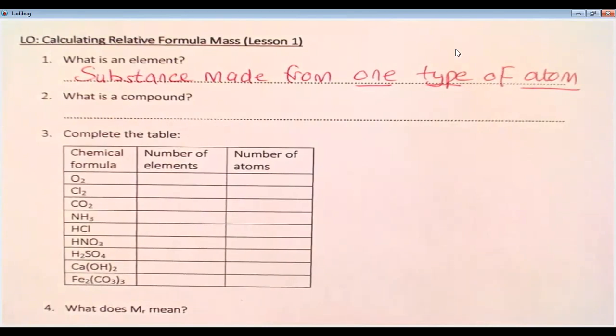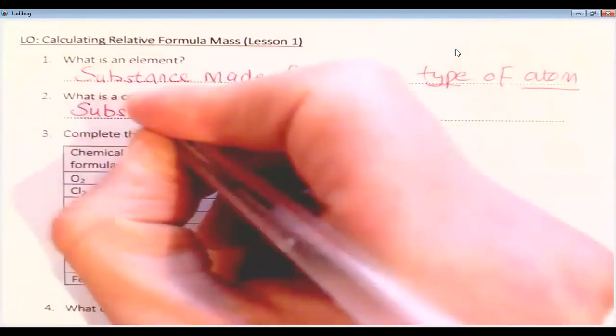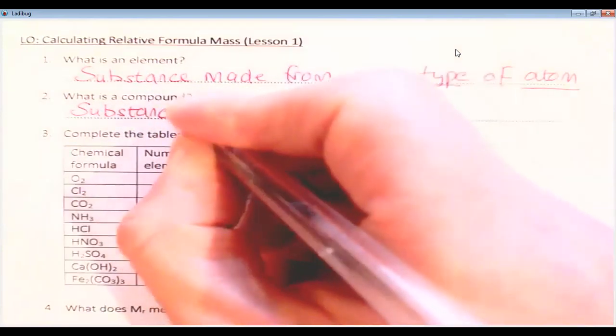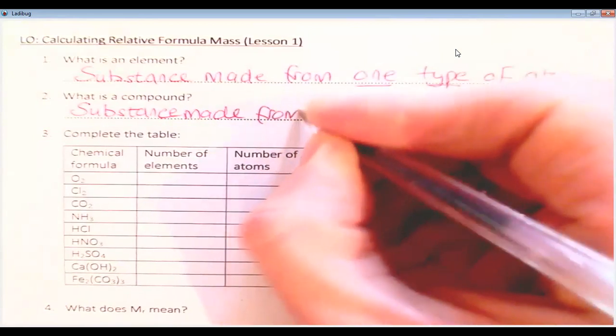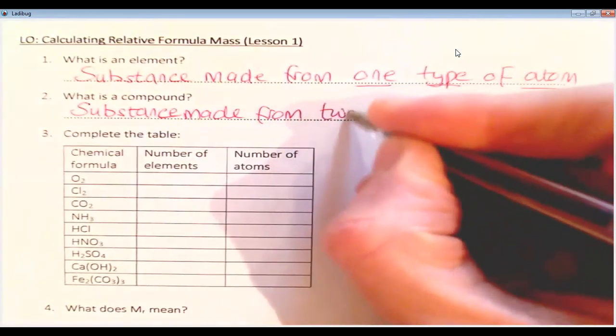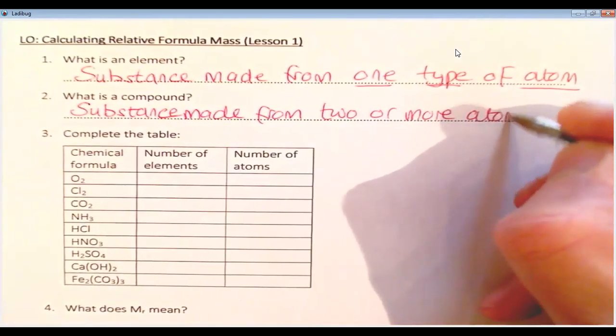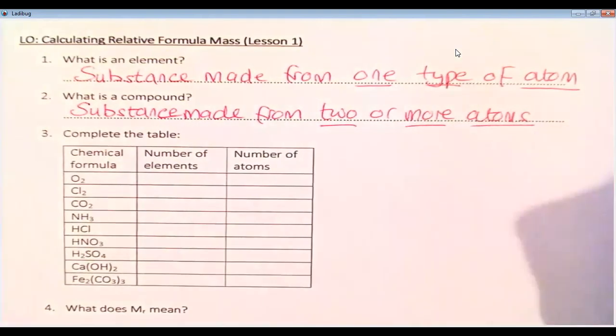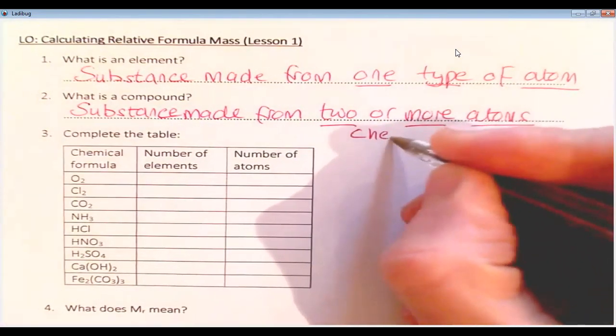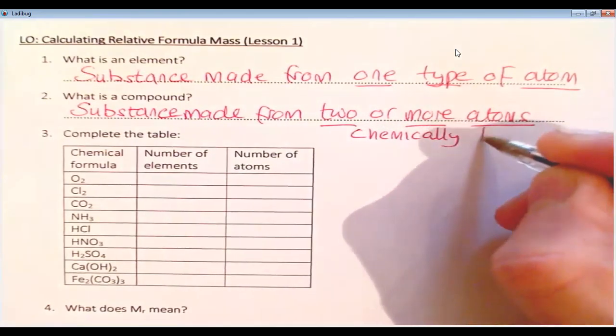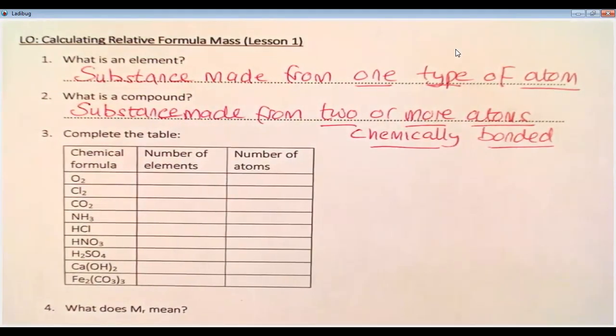The next question says, what is a compound? And the answer to that question is substance made from two or more atoms. So it's two or more atoms, but there is an important bit on the end, which is chemically bonded. So those atoms have to be bonded together.